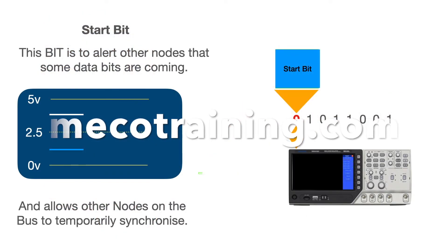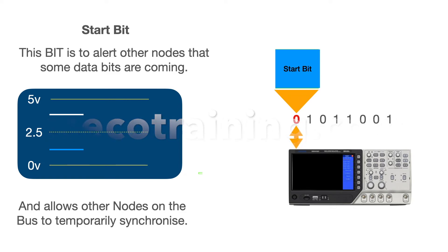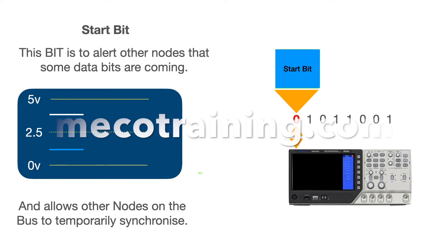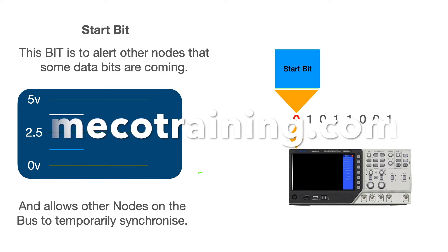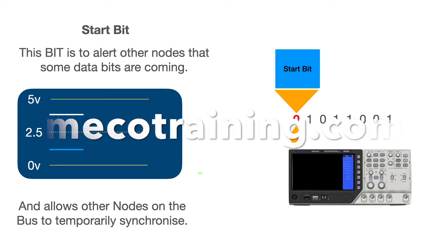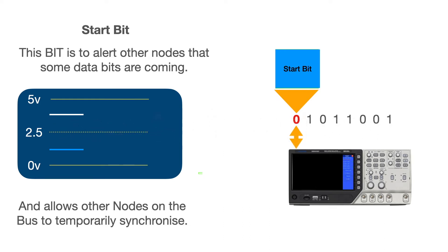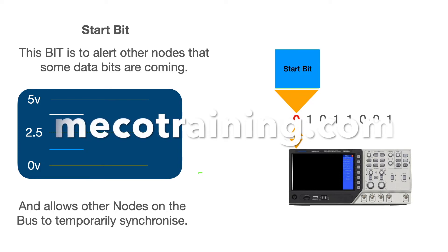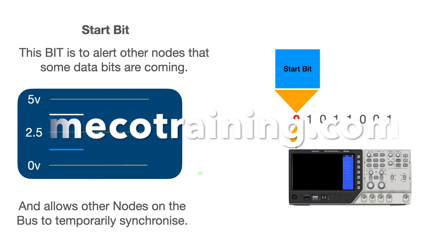These voltages are changing up to 250,000 times per second, so it's not possible to analyze the data with a standard multimeter. Shown here is an oscilloscope, which allows us to capture and view very quick signals as voltages on a graph. With an oscilloscope we can take a snapshot of the pulses and analyze the voltages. Let's look at the first few bits of a data message called a CAN frame. The first bit is a start bit, which serves two purposes: it lets the other nodes on the CAN bus know that some data is on the way, and it is flexible in length so it can be adjusted to enable other devices to synchronize.